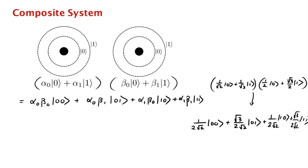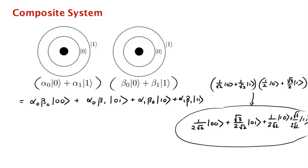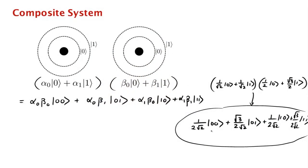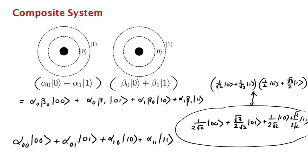Now suppose I ask a different question. Suppose I give you the state of the two qubits together and ask: can you find the state of each qubit separately? If it was this particular state of the two qubits, you could tell me the state of the first qubit is the plus state and the state of the second qubit is (1/2)|0⟩ + (√3/2)|1⟩. But what if I gave you some arbitrary state of the two qubits and asked you to factor it?